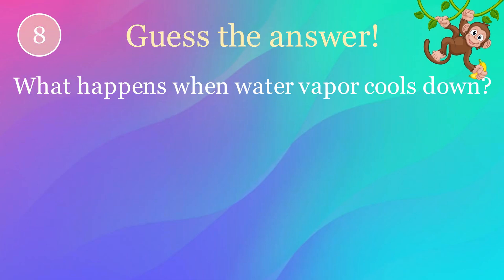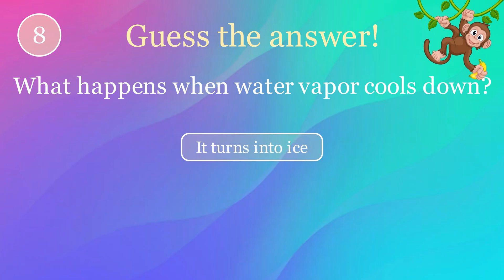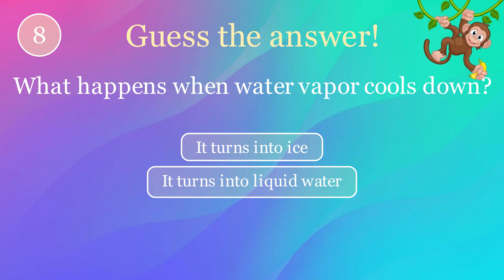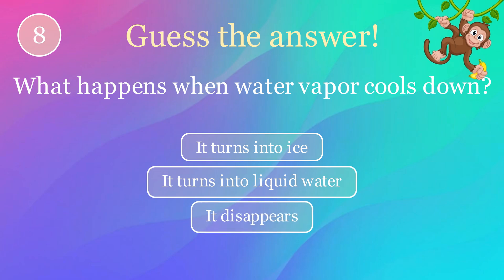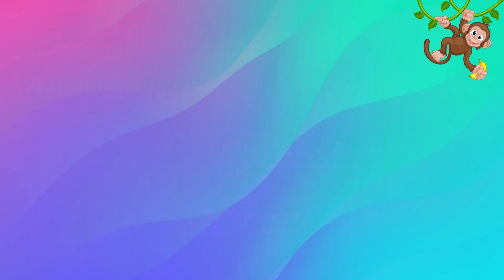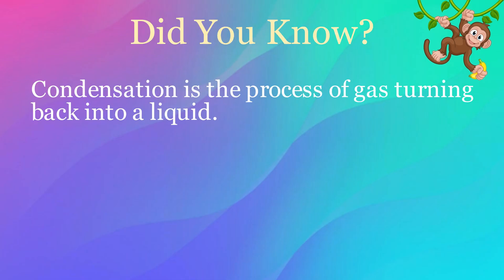What happens when water vapor cools down? Options: it turns into ice, it turns into liquid water, it disappears. The correct answer is it turns into liquid water. Here's an interesting fact: condensation is the process of gas turning back into a liquid.